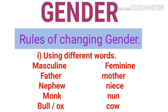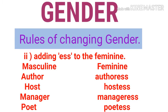The second rule is that certain words become feminine by adding '-ess' to them. For example, the word 'author' becomes 'authoress'. Host becomes hostess. Manager is a common word — while we also write manager, the appropriate feminine form is 'manageress'. Similarly, mayor becomes mayoress, and poet becomes poetess.